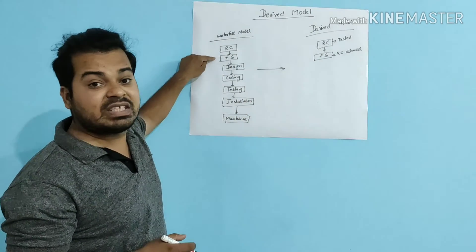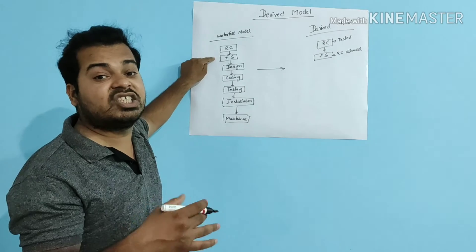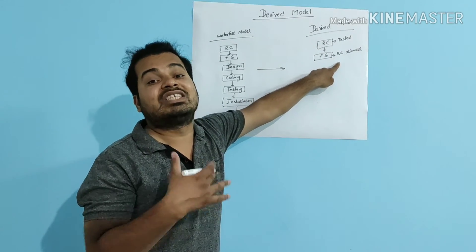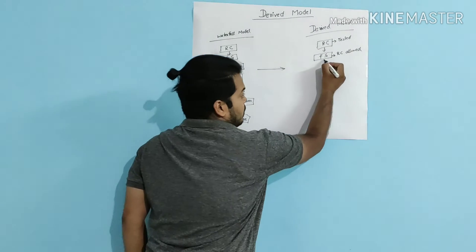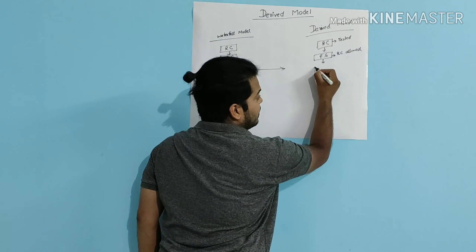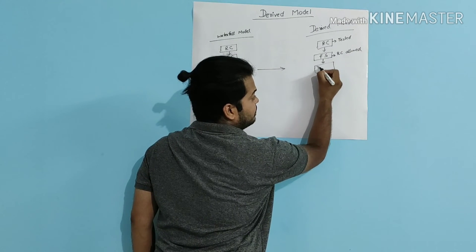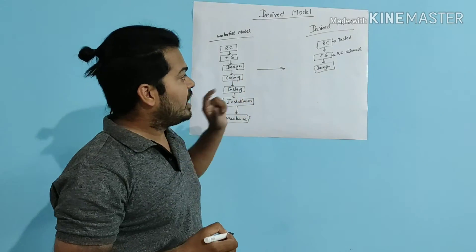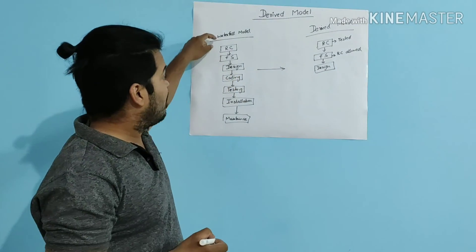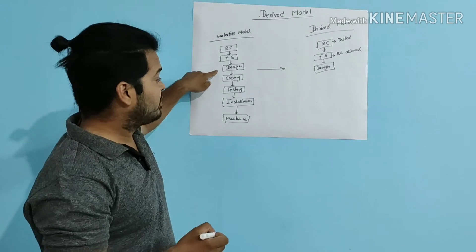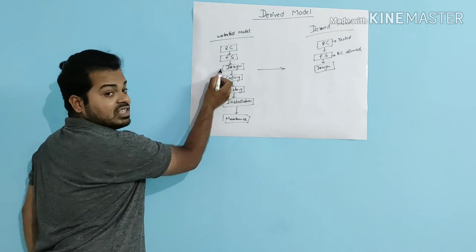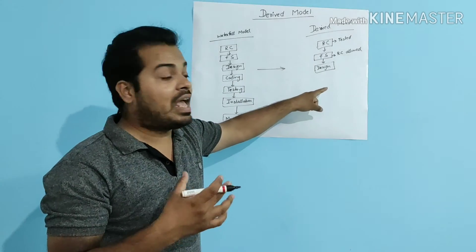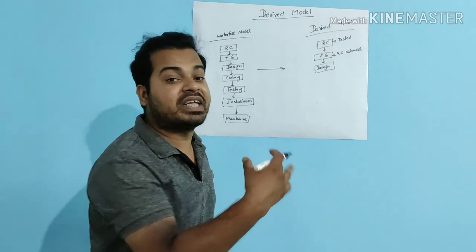In my waterfall model, once all the feasibility study is done, requirement changes are not allowed. But in my derived model, I am allowing requirements to be changed. Also, in the waterfall model the design phase was not tested, but in my derived model I will allow the design phase to be tested.